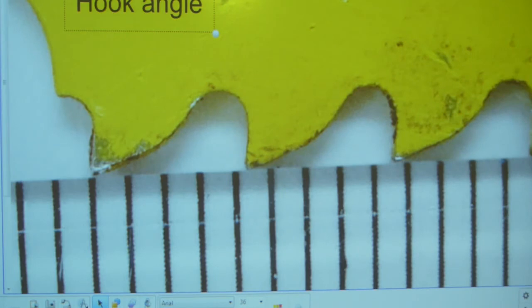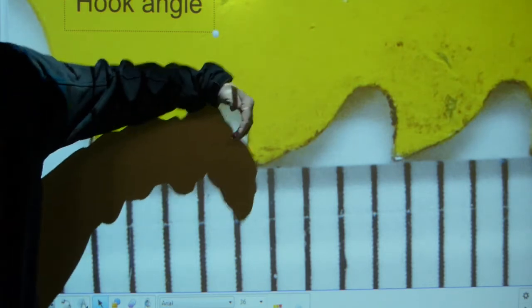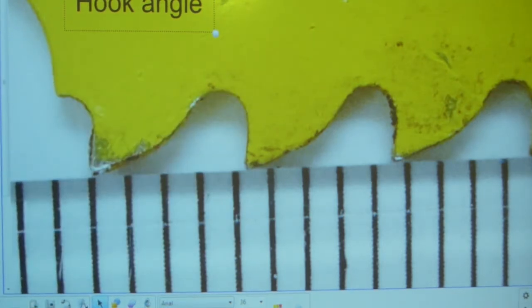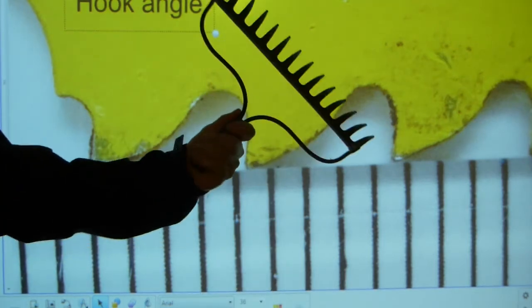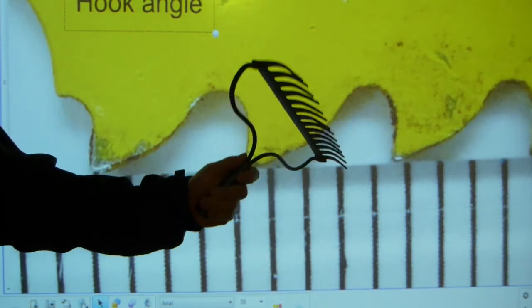Another hook angle will be on this yellow sawzall blade, and it's not a negative hook angle. You can see they are more pronounced. This hook angle, or also known as rake angle, of course got its name from gardening hand tool, the rake.